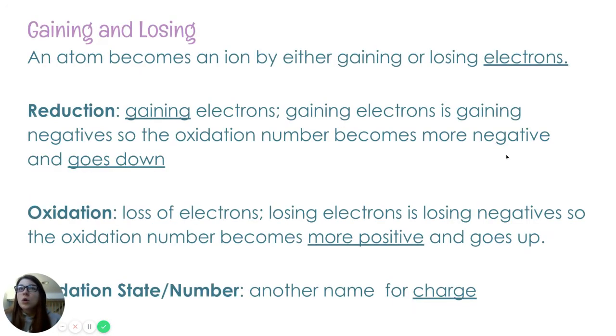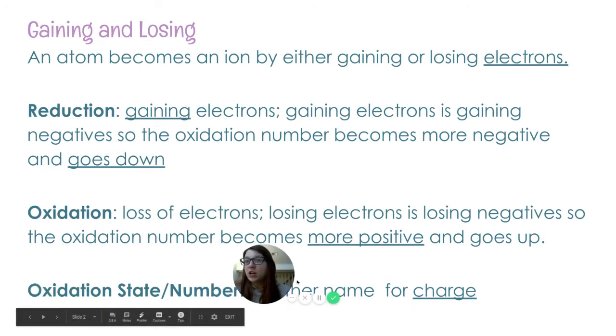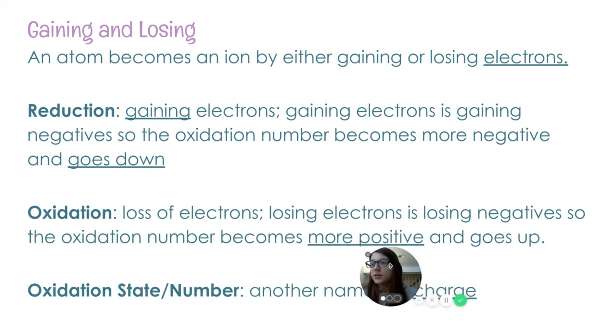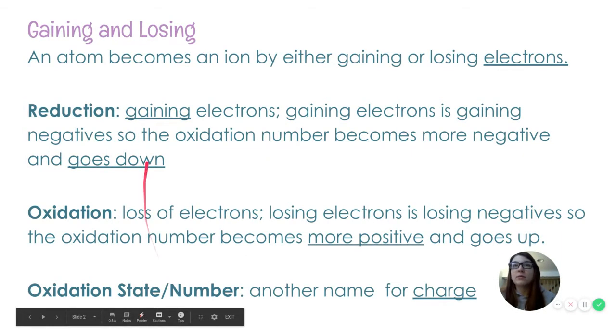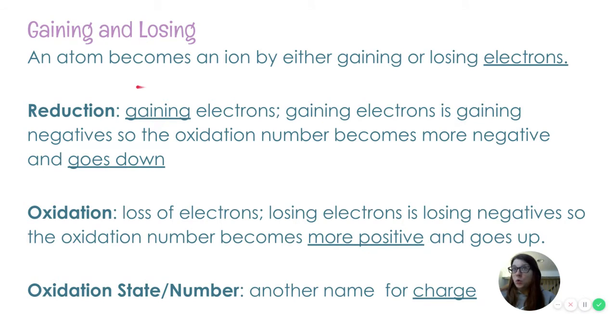So we are starting with a refresher. Here we go. So we know that an atom becomes an ion by either gaining or losing electrons. This goes all the way back to bonding. If something is to become a cation, that means it's a positive ion and therefore it had to give away electrons. And an anion is a negative ion. And that had to take in extra electrons in order to be negative. So we have two processes, one for gaining and one for losing.